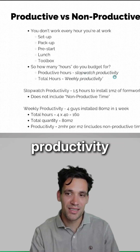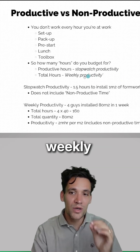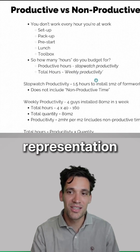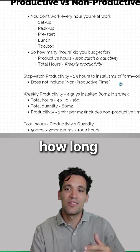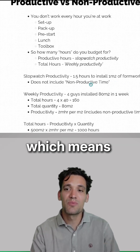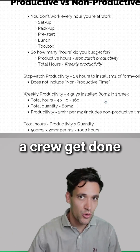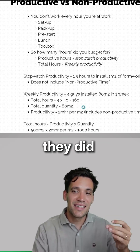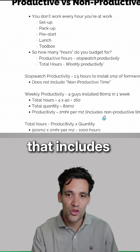It depends how we measure productivity. We can do stopwatch productivity, where we measure someone doing a specific task, or we can do weekly productivity. I prefer weekly productivity because I think it gives you a much more accurate representation. Stopwatch productivity would be measuring how long it takes someone to put up a meter squared of formwork — it might take them 1.5 hours — which means there's no non-productive time included in that. Weekly productivity is where we measure how much a crew gets done across a week. For example, five guys did 80 meters squared of formwork in 160 man hours, which gives us two man hours per meter squared. That includes non-productive time.